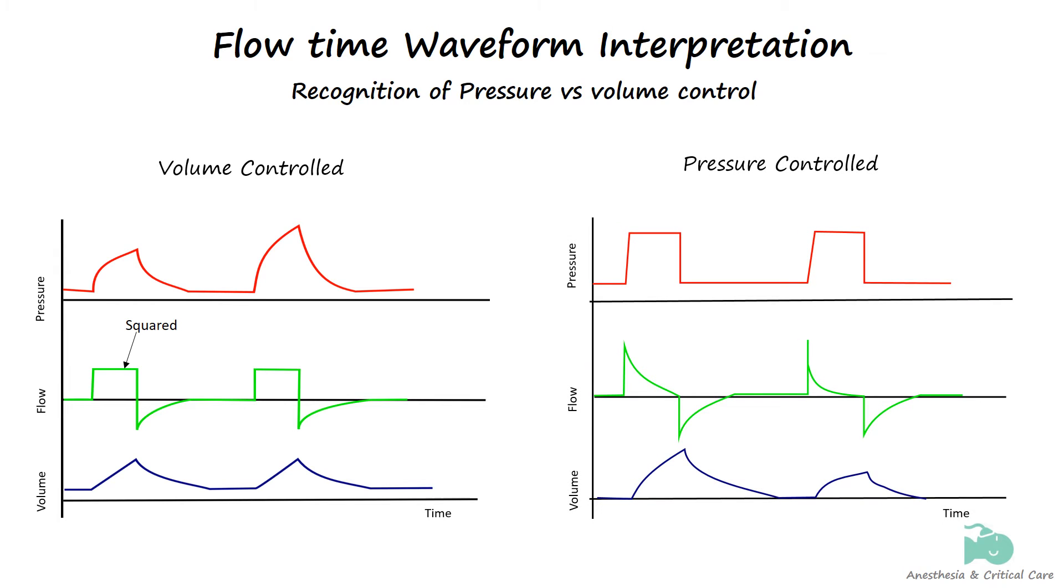In contrast, pressure-controlled ventilation features an exponential decay or descending flow pattern, where the flow starts high and gradually decreases as the lungs fill with air resulting in a downward sloping curve on the waveform.